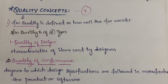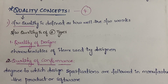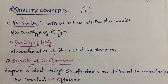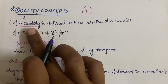We have four quality concepts. The first one is quality, the second is quality control, the third is quality assurance, and the fourth is cost of quality. These are the four things we have.